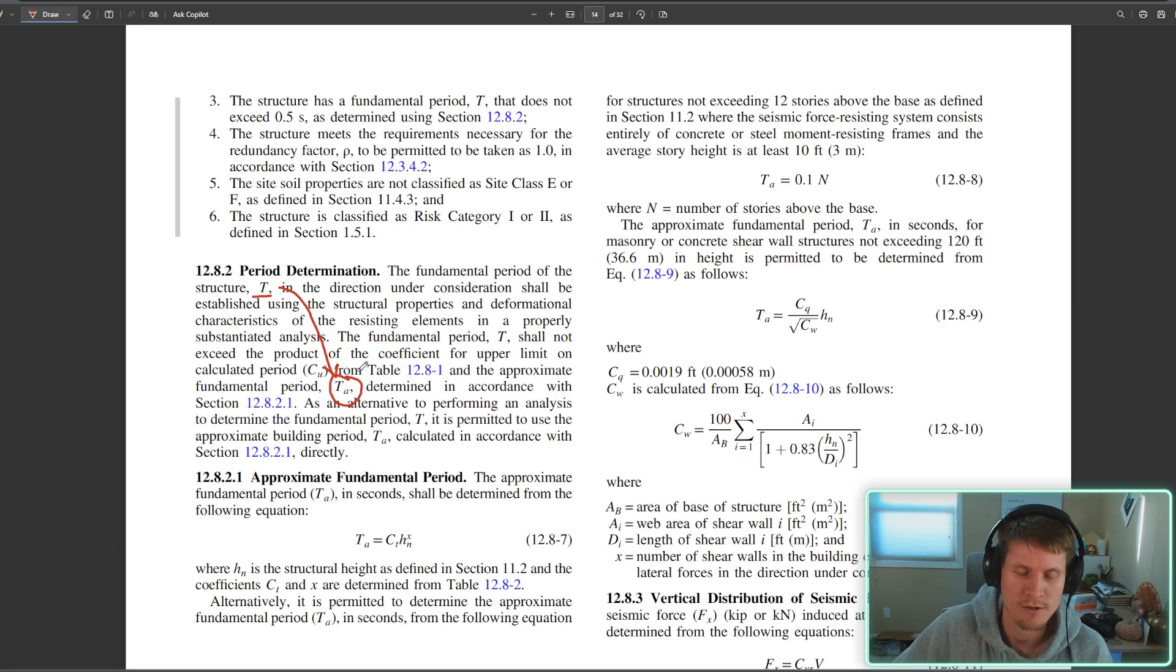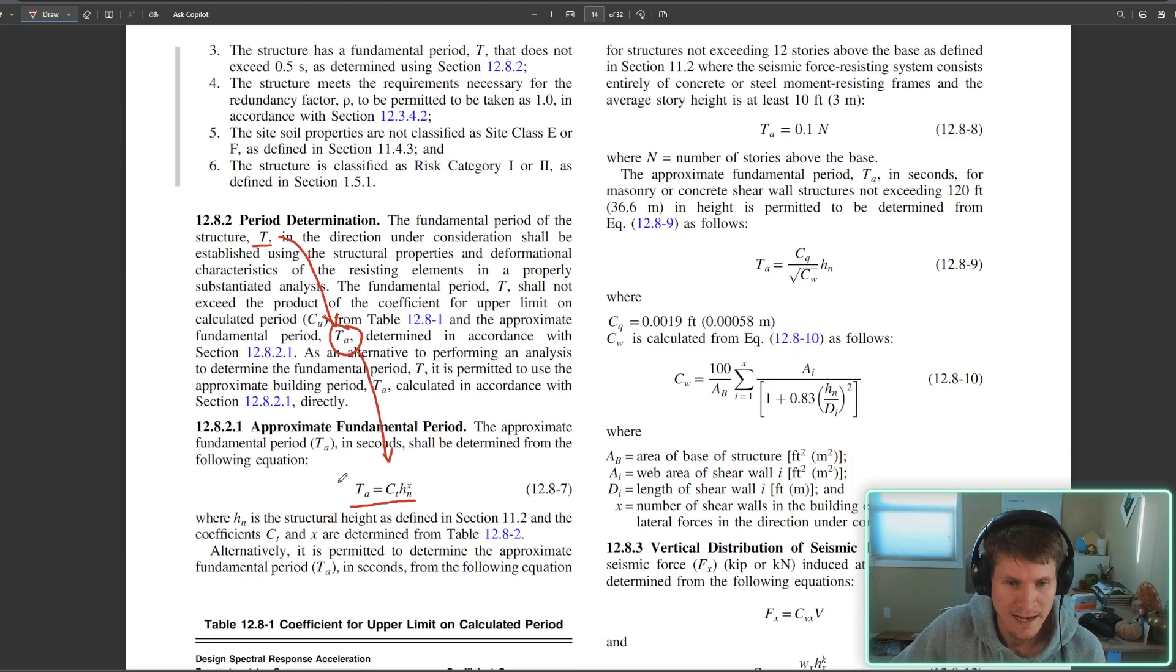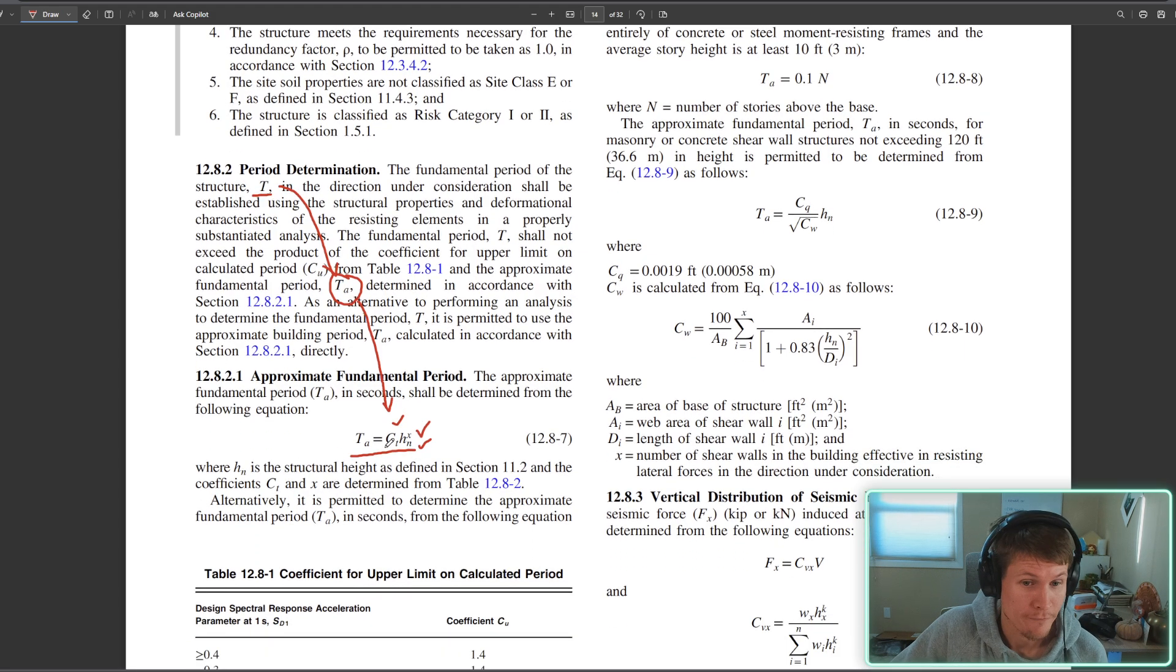Finding the actual period instead of your approximate is a longer process and something that I don't believe the PE exam would ask of you because you only have those six minutes to solve a problem, whereas the approximate period, as you will see, is pretty straightforward. If you keep moving down the list here you'll see that they provide an equation for the approximate period.